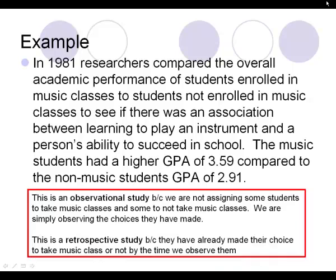This is an observational study — we are not assigning some students to take music classes and some not. We're simply observing the choices they have already made. This is a retrospective study because they've already made their choice by the time we observe them. To make it prospective, we'd catch them early in elementary school and track them throughout their school years.